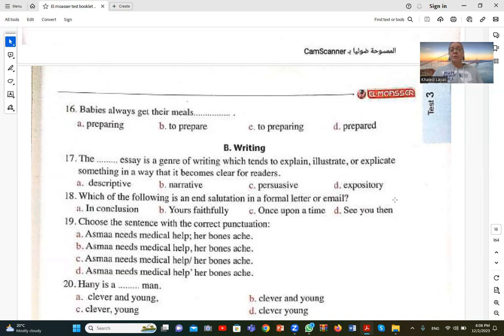Number nineteen. Choose the sentence with the correct punctuation. The sentence with correct punctuation: Asma needs medical help with capital A for proper name, semicolon, her bones ache, then full stop. Why semicolon? Because the clause after it explains the first sentence. Why does she need medical help? Because her bones ache. The second sentence is related to the first and explains it. A is the best sentence with correct punctuation.